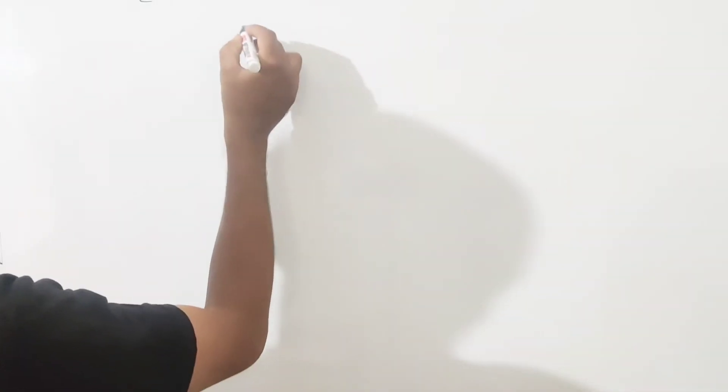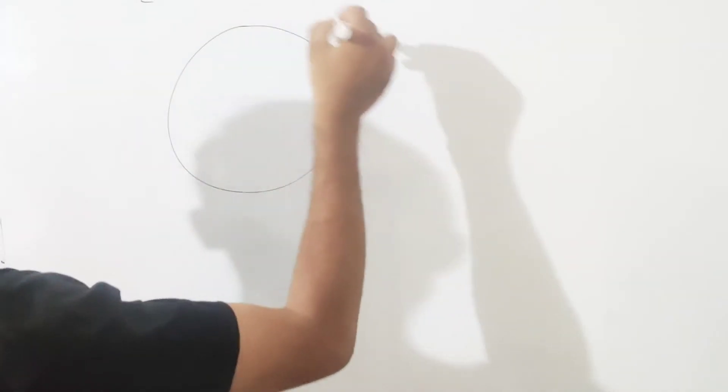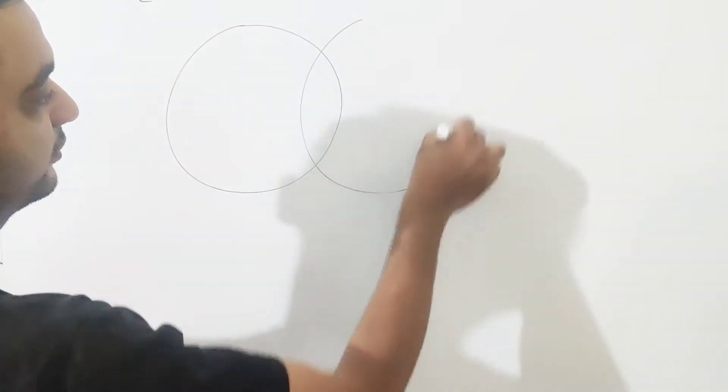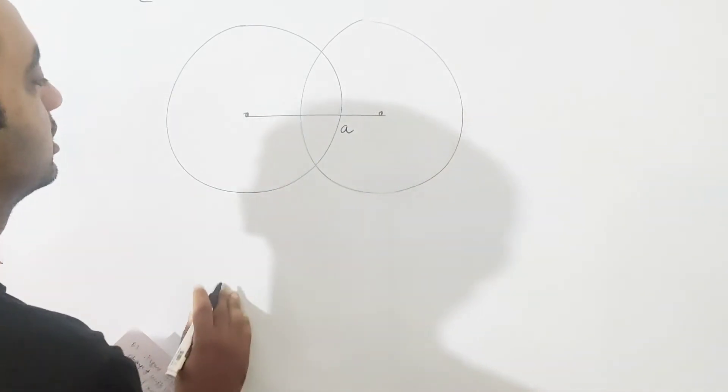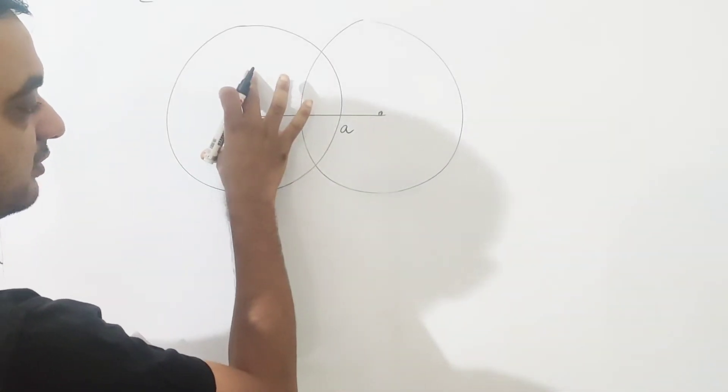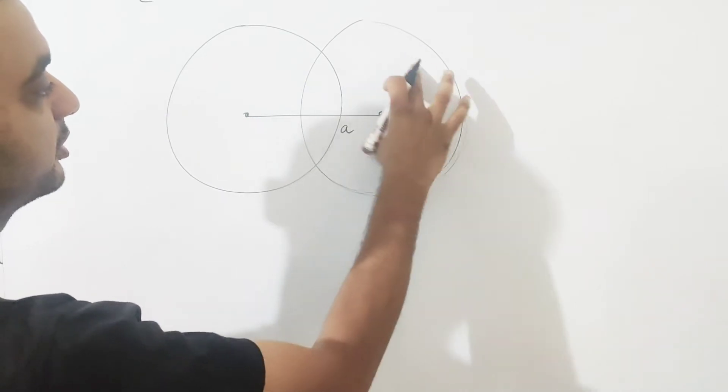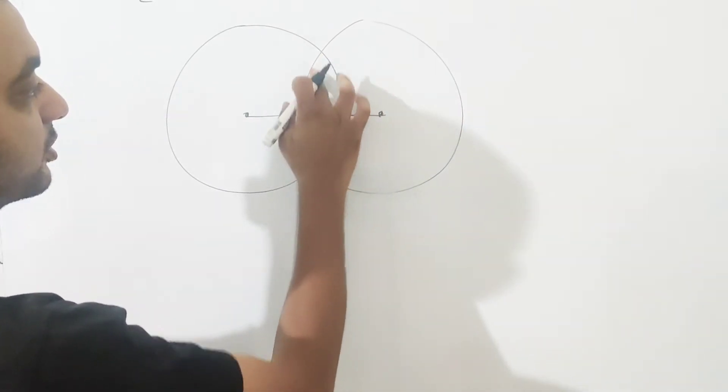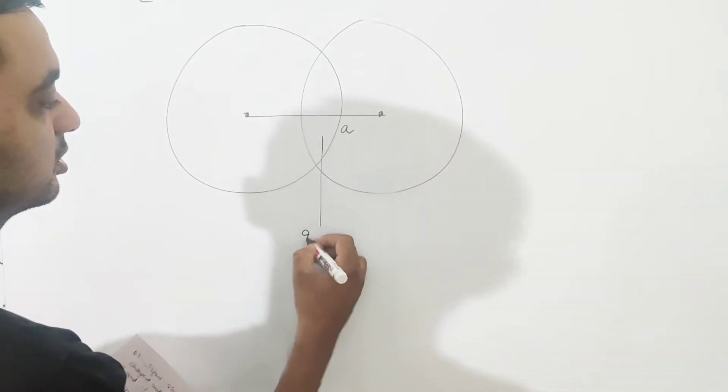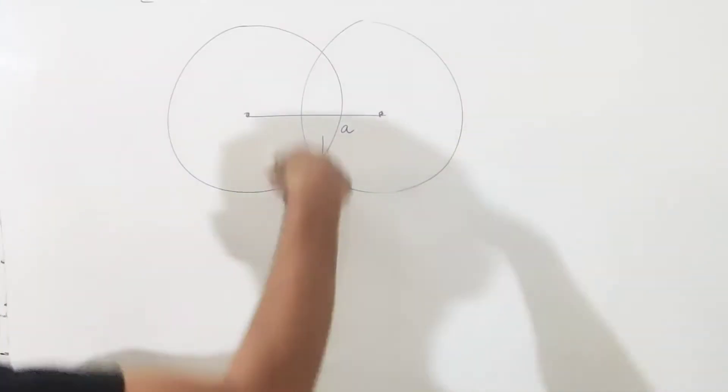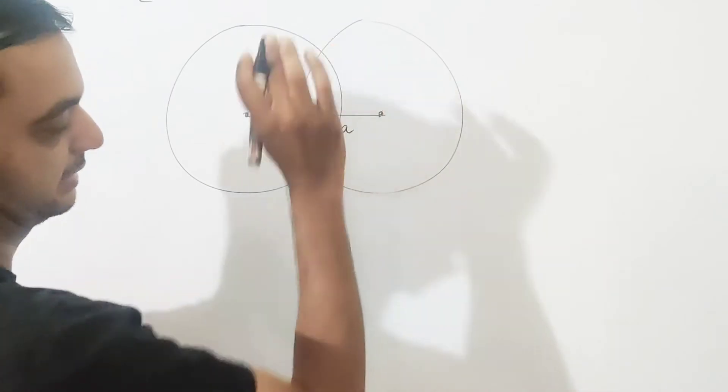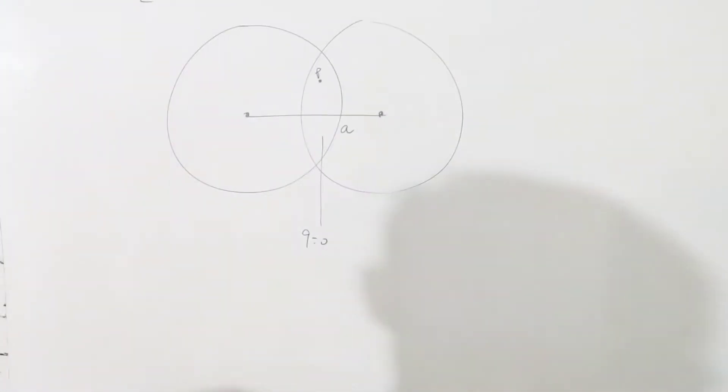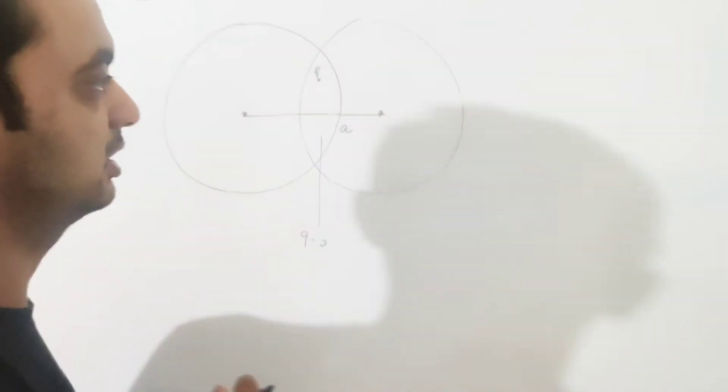We have one sphere here and the other sphere, and the center separation is a. This is charge uniformly distributed, this is charge uniformly distributed, and this is no charge, a chargeless portion. We have to take a random point and find the electric field. Consider this charge density rho.